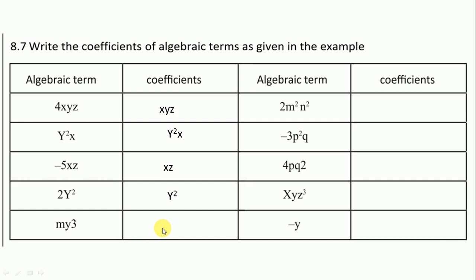Here the alphabetic coefficient is xz and here y². Alphabetic coefficient means you write all alphabet terms. Likewise, here is m²n², p²q, here pq², xyz³, and last -y.